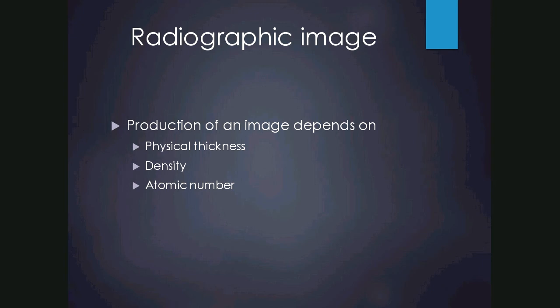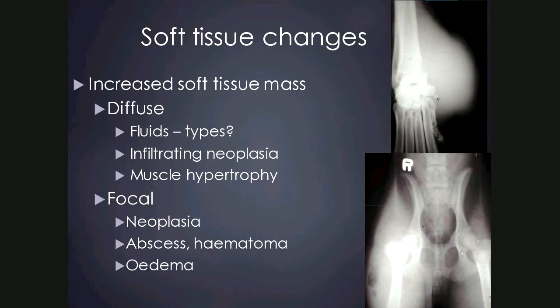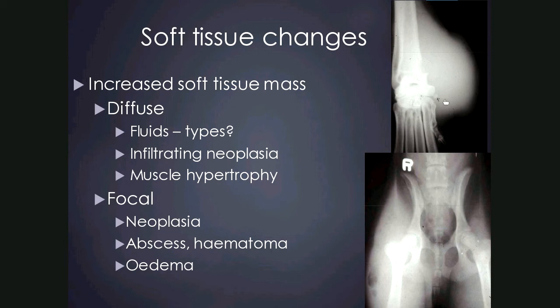We can get soft tissue swelling or increased soft tissue mass, which may be diffuse or focal. Diffuse changes might be due to fluids such as inflammatory fluid like cellulitis, infiltrating neoplasia, or muscle hypertrophy. Focal soft tissue swelling could be a neoplasm, abscess, haematoma, cyst, or oedema. In the image here there's a large focal soft tissue swelling over the distomedial radius and the carpal joint area. In the pelvis example there's large generalised soft tissue swelling over the right pelvic limb with gas opacities, probably a cellulitis with abscessation.